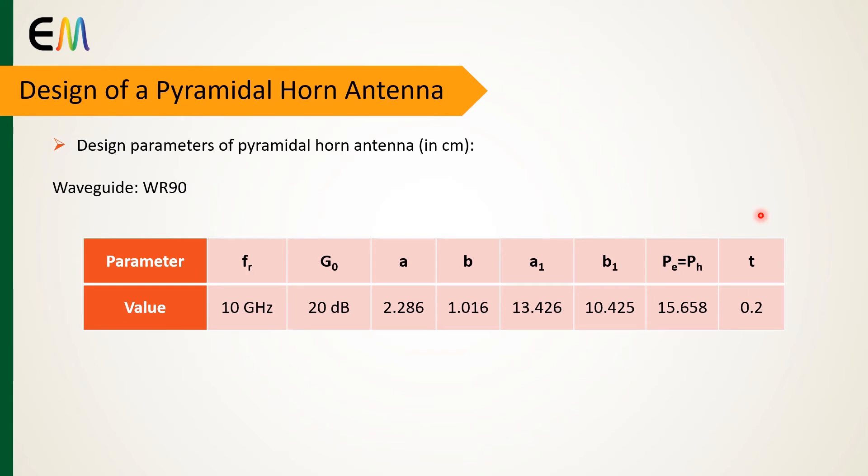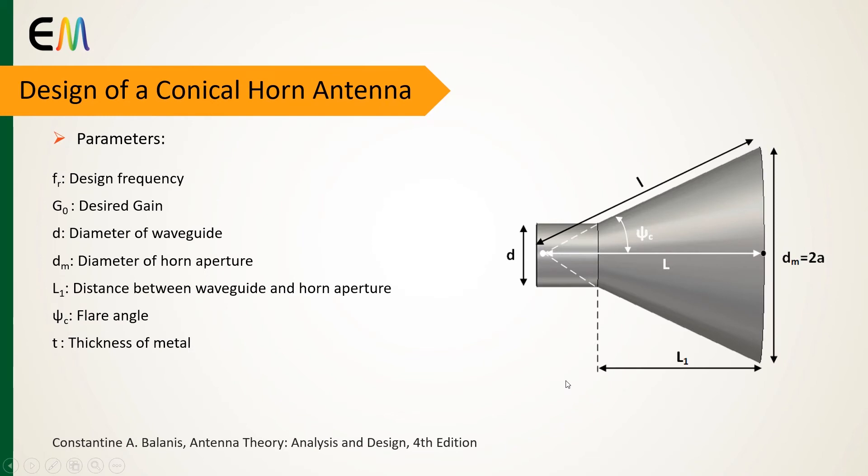Finally, after solving the design equation, we calculate the physical dimensions of our antenna. In this design, I consider the WR-19 waveguide and the frequency of 10 gigahertz and the design gain of 20 decibels.